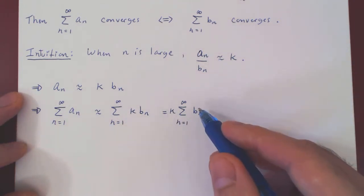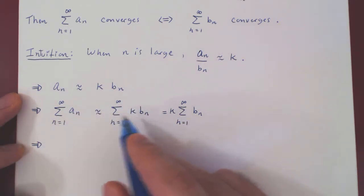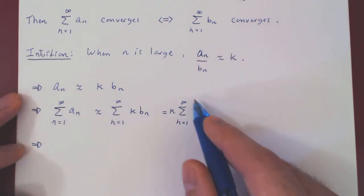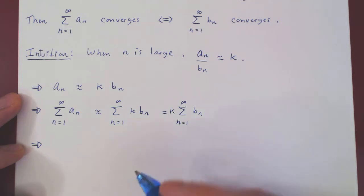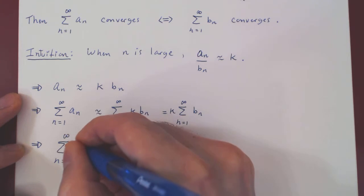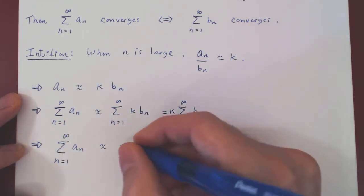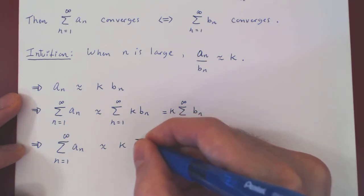Now look what we have here. Let me just ignore this part and rewrite the first series and the other series. So the series of an is roughly a fixed multiple of the series of bn.